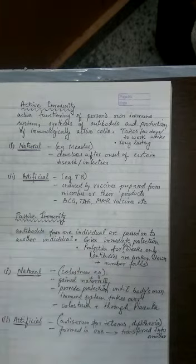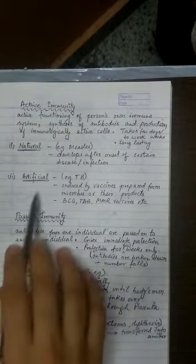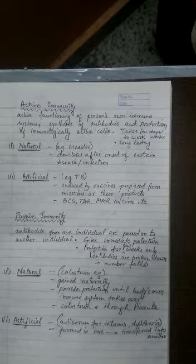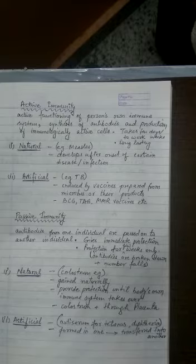So it can be natural. Natural means it's an infection. Artificial means vaccination. So active functioning of the person's own immune system occurs here and then the body's immune system develops antibodies and this is how immunologically active cells are produced.